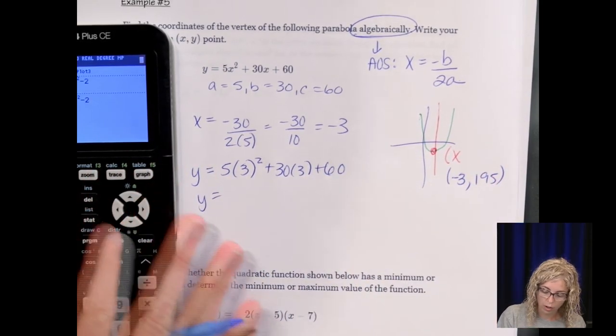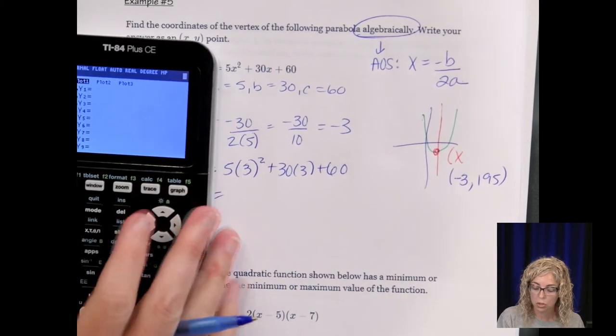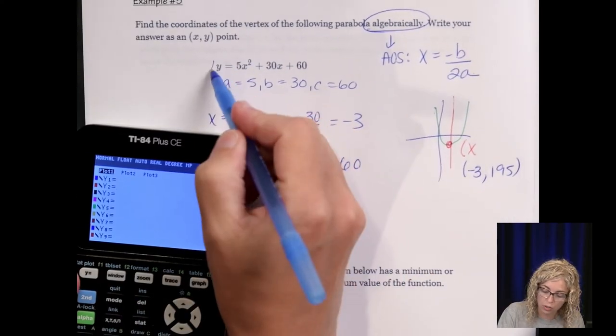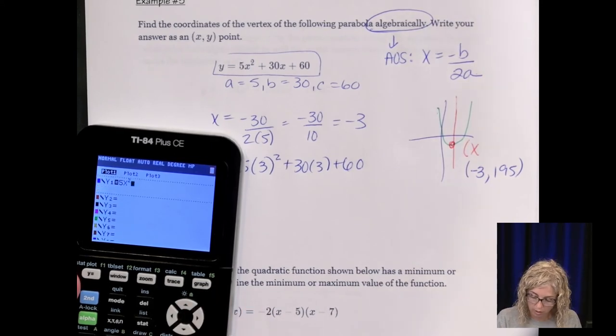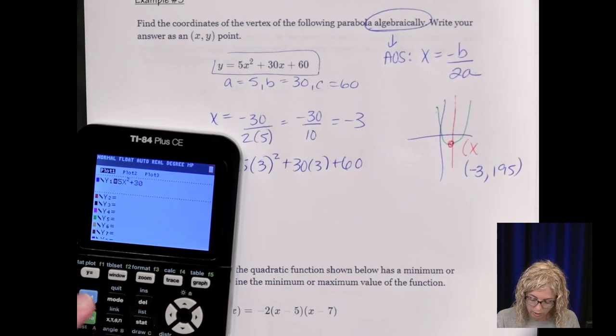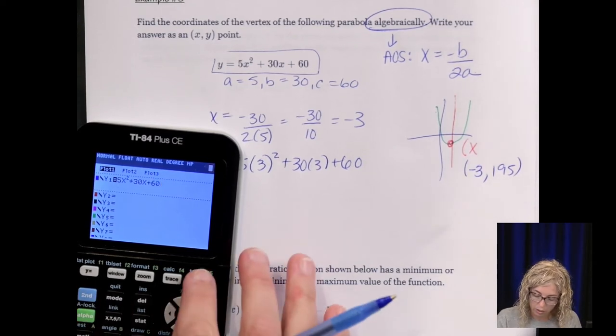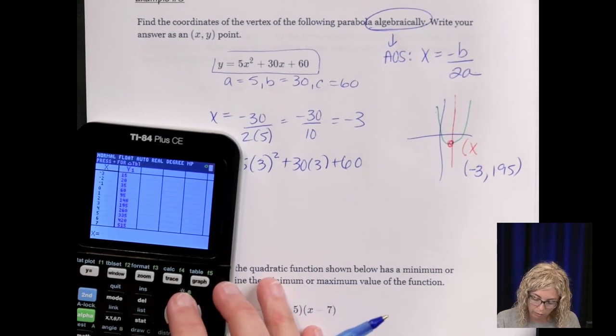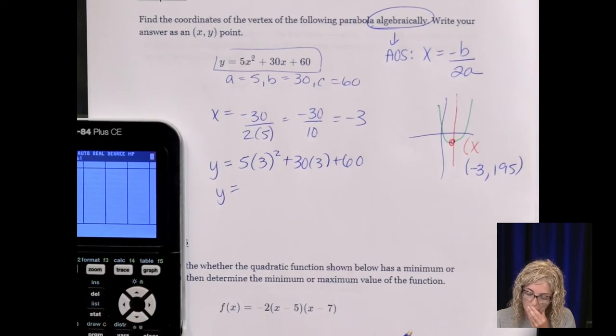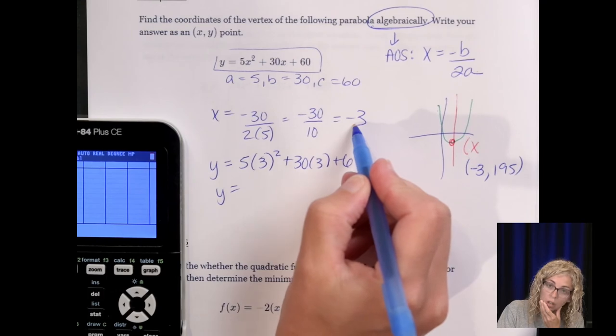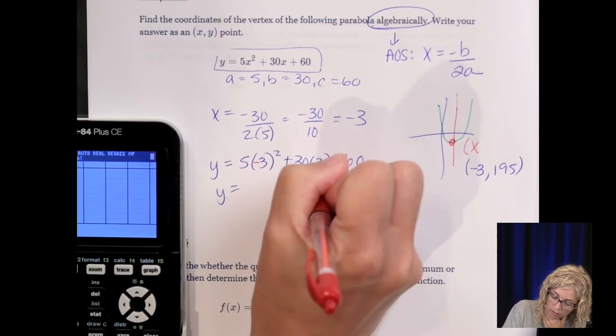All right, so let's get out of the graphing. So 5 parenthesis negative 3 squared plus 30 times negative 3 plus 60. And we get 195. We could also go to our calculator and check it to make sure we're right. So we type in the original equation. So 5X squared plus 30X plus 60 and then go to the table and I'm looking at negative 3 and it should be 15. So, oh, the issue is that negative.